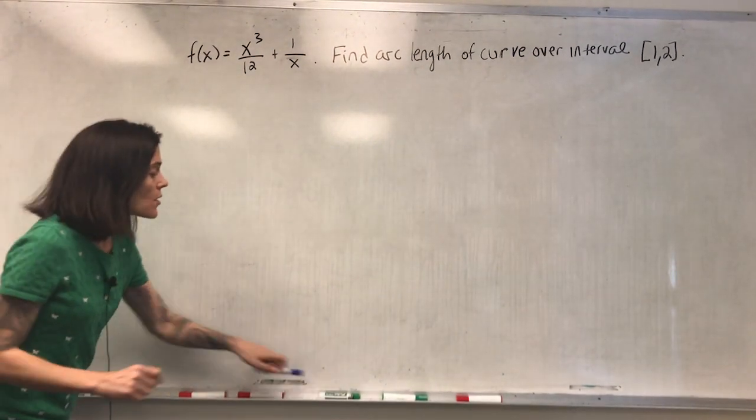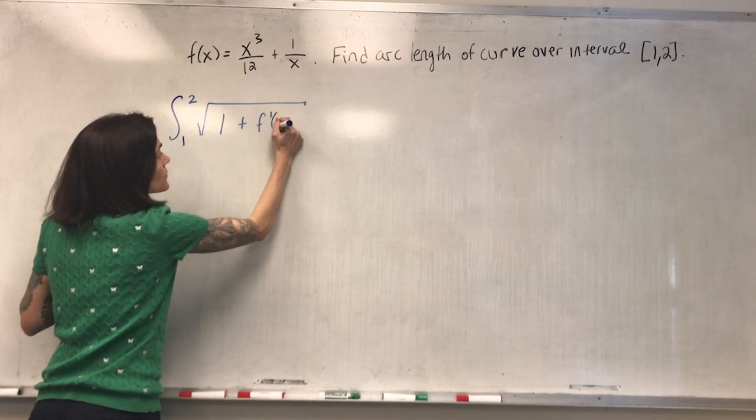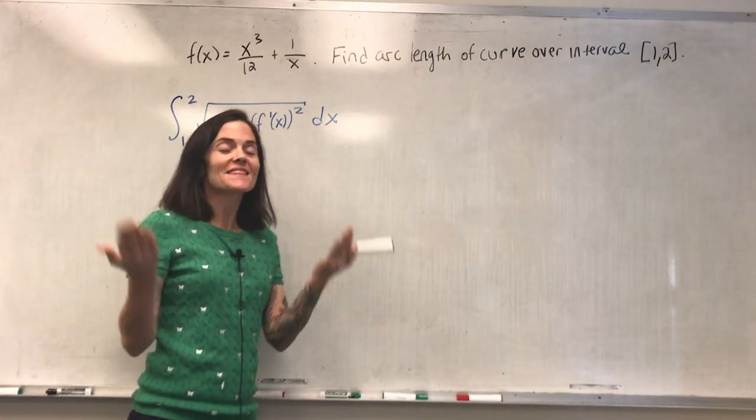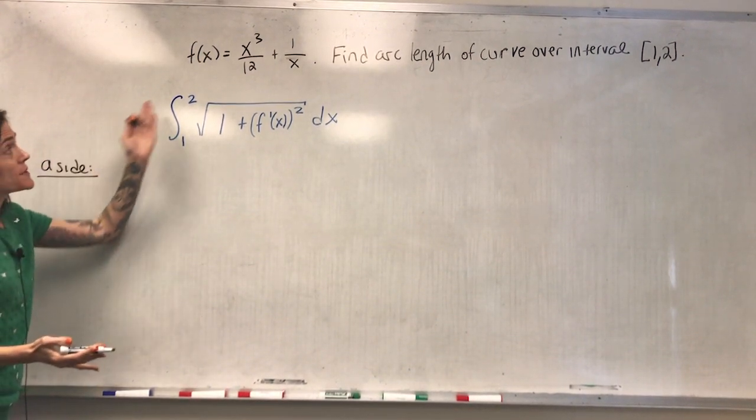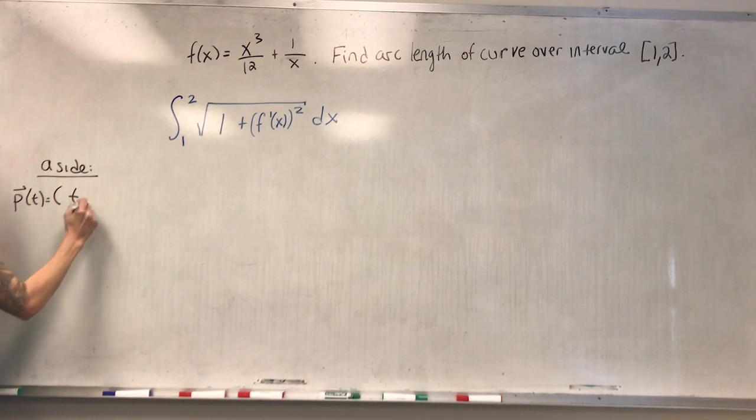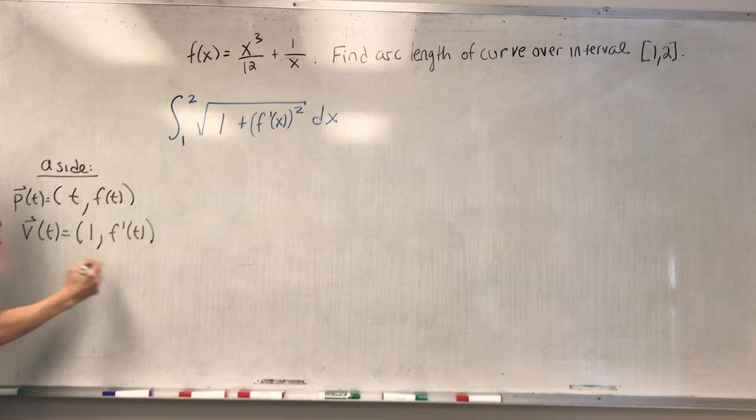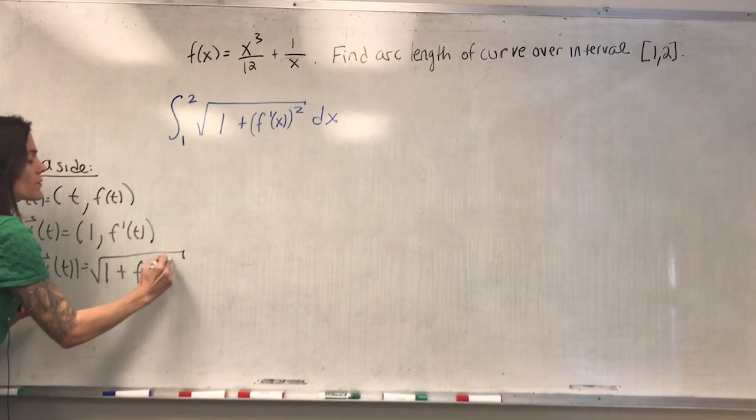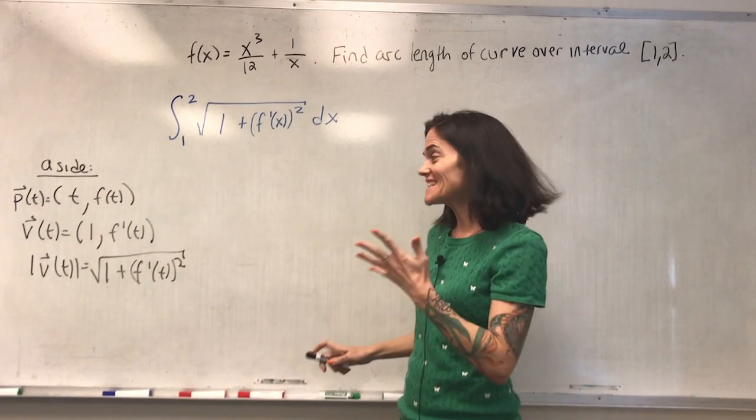We know the formula. It is the integral one to two, the square root of one plus the derivative squared dx. This formula, if you forget, it really comes from the last problem we did. We can think about this curve as being motion in space with position t, f of t. And then the velocity would be one, f prime of t. And the length of the velocity, which is our speed, would be exactly the square root one plus the derivative squared. So this formula that we use for arc length comes from what we just did in the last problem.